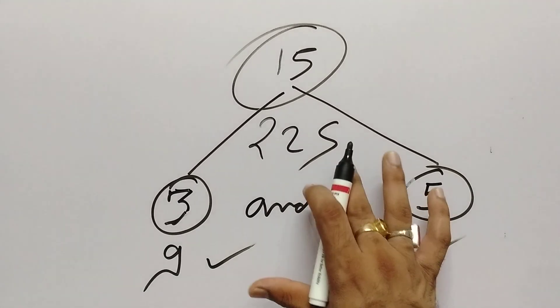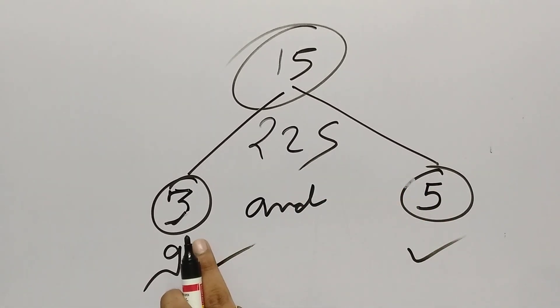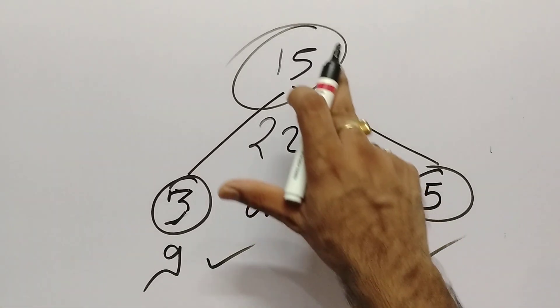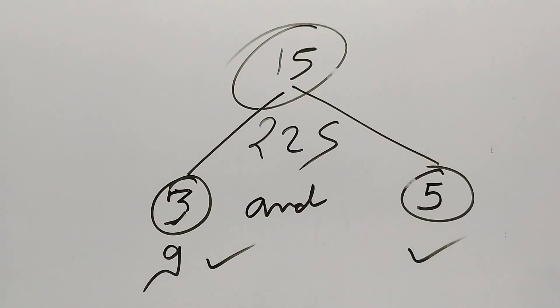So 225 is exactly divisible by 3 and 5. So we can say that it is divisible by 15. Simple. Let's take another example.